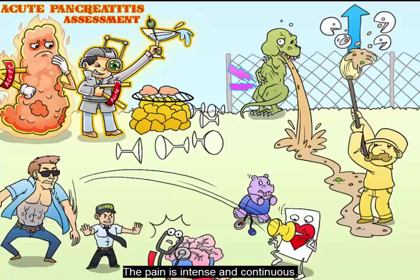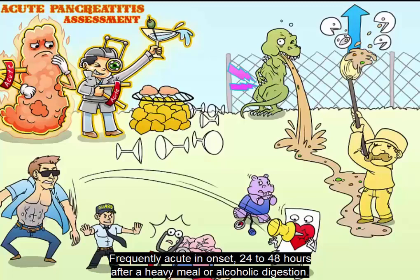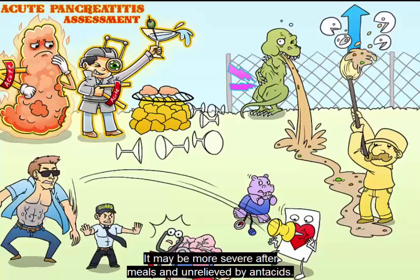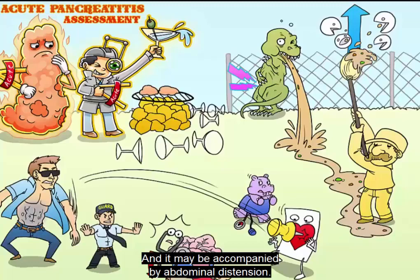The pain is intense and continuous, located in the mid-epigastric area. It is frequently acute in onset 24 to 48 hours after a heavy meal or alcoholic ingestion. It may be more severe after meals, unrelieved by antacids, and may be accompanied by abdominal distention.